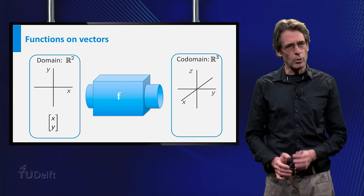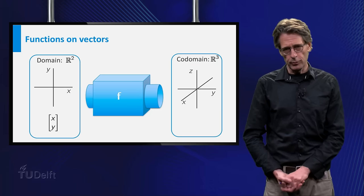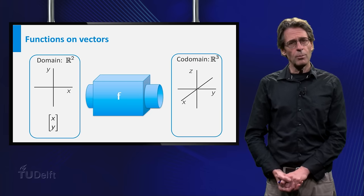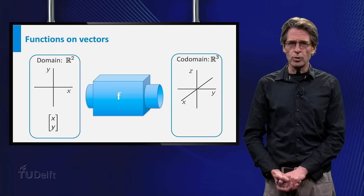In principle, the domain and the codomain can be any set you can think of. For instance, in the next example, both the inputs and the outputs are vectors.